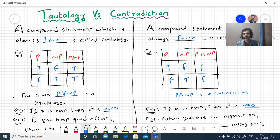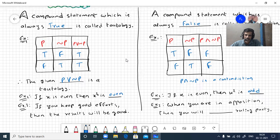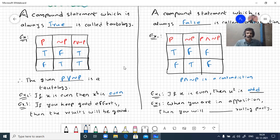It can be proved by direct methods also. One real example: if you keep good efforts, the result will be good or satisfactory, it won't be bad.